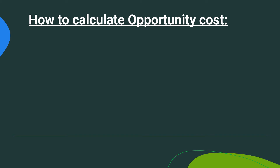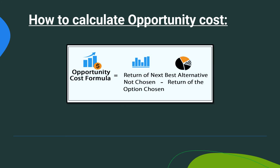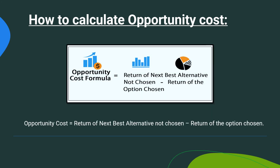So let's look at how to calculate opportunity cost. There are many formulas available but this is the most basic and easiest one. Opportunity cost is equal to the return of the next best alternative not chosen minus the return of the option chosen.